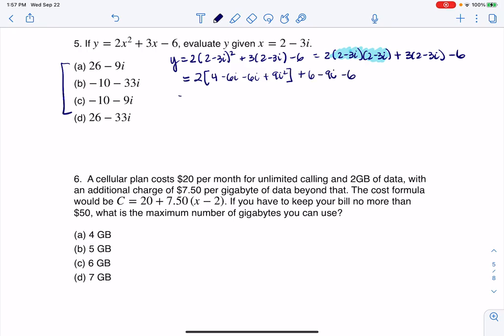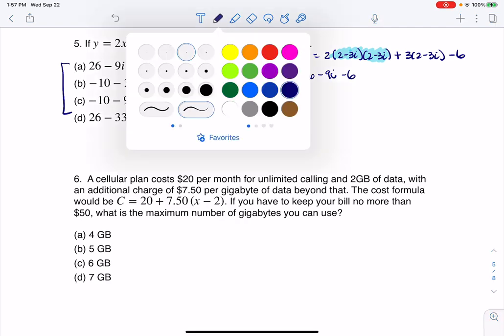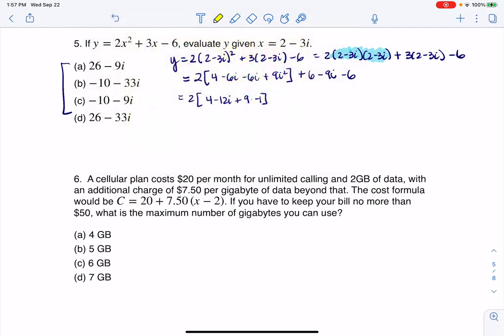All right, let me go ahead and simplify the bracket. So if I look at this, this is 4 minus 12i. i squared is always negative 1. And if I look at these, I'll switch pen colors just so we can see it. The 6s cancel, so ultimately I'm just going to have a minus 9i.